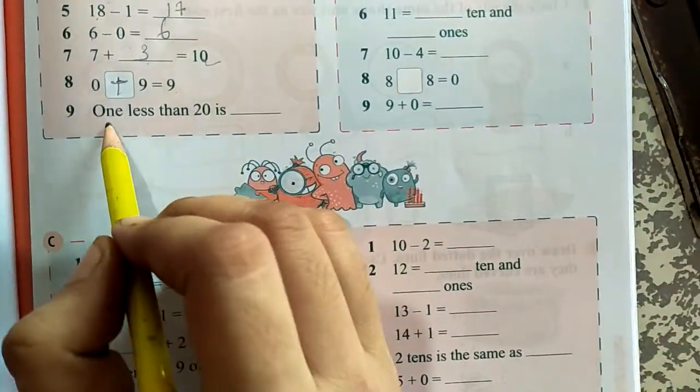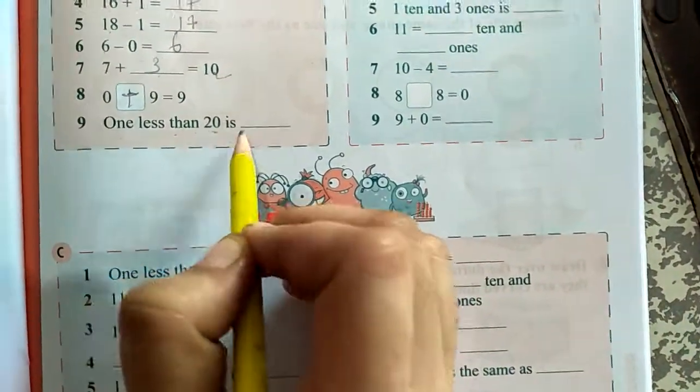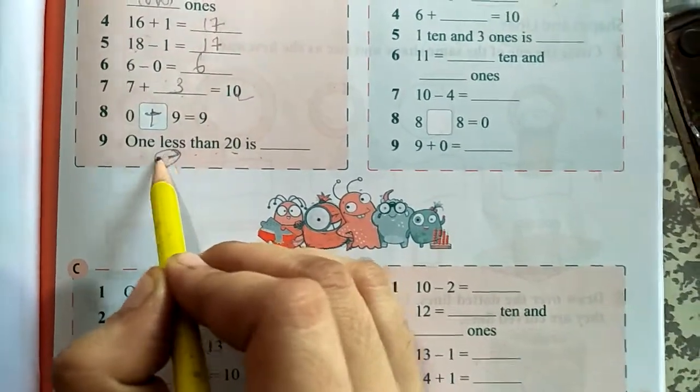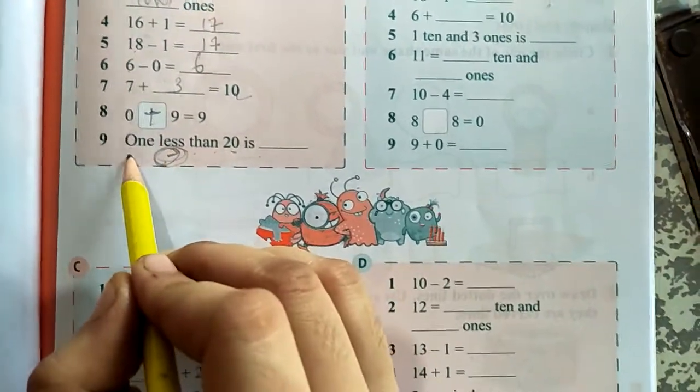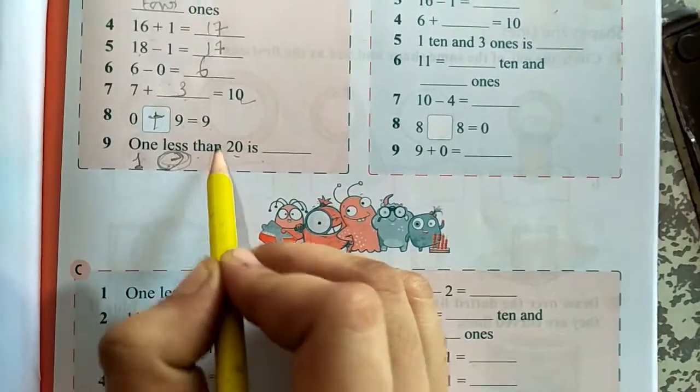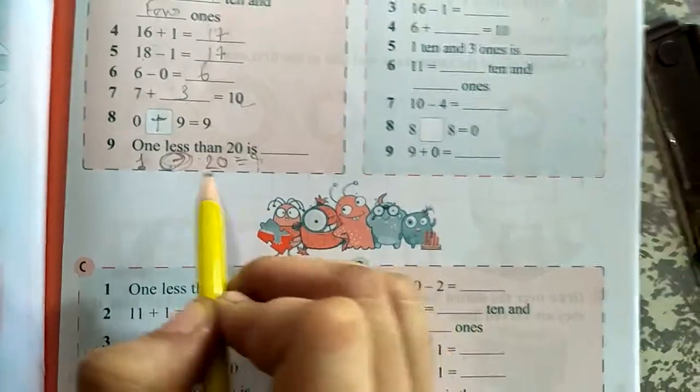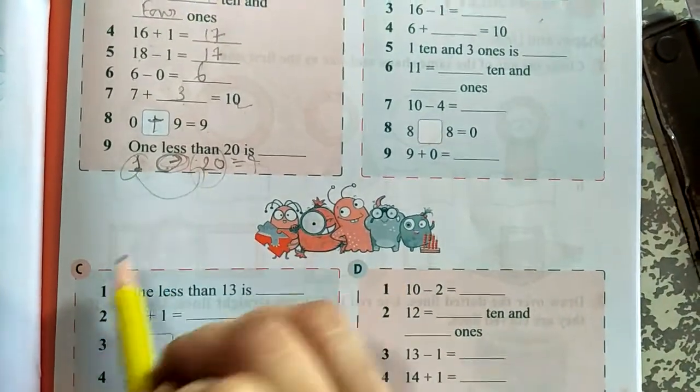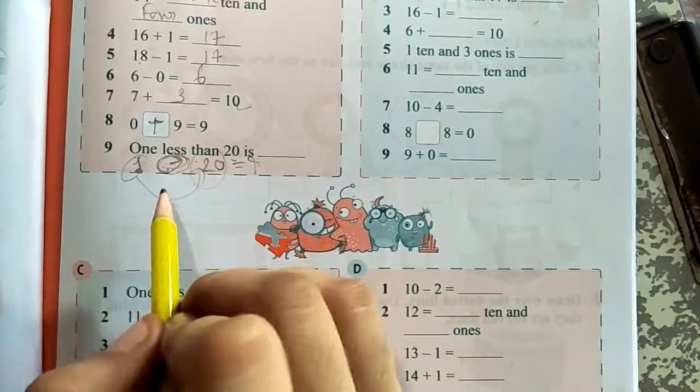1 less than 20 is what? So 1 less means minus. Less means minus. So 1, that is 1 less than 20 is equal to what? So you have to minus 1 from 20. So 20 minus 1 is 19.